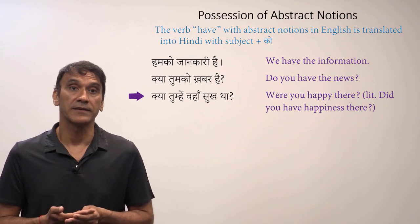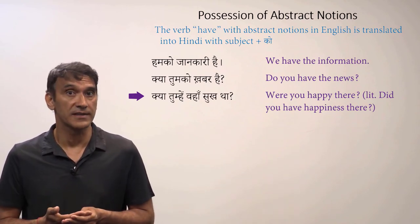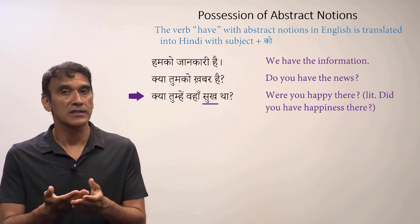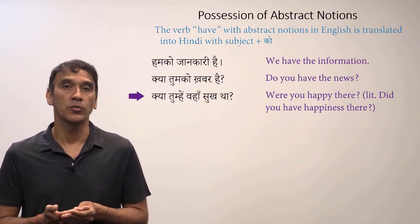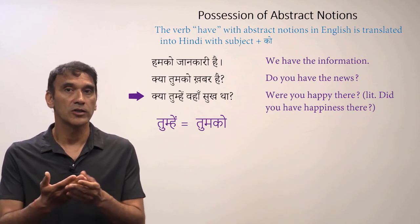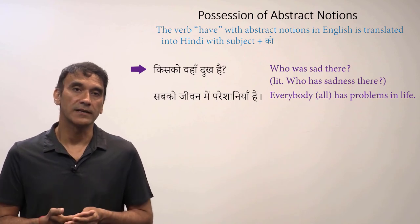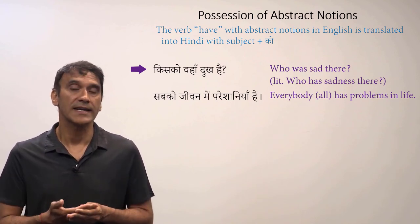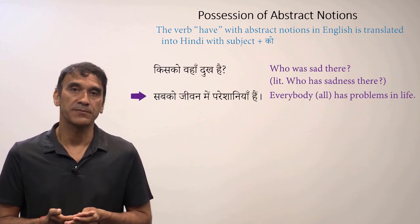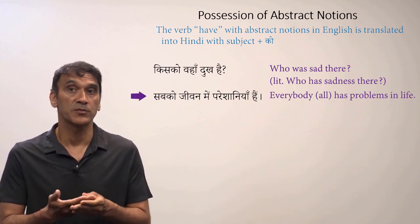'Kya tumhae vaha sukh tha?' — were you happy there? The literal translation is 'did you have happiness there?' 'Sukh' (happiness) is an abstract notion, so the subject takes the postposition 'ko' — here 'tumhae' is the shortened form of 'tumko.' 'Kisko vaha dukh hai?' — who is sad there, literally 'who has sadness there?'